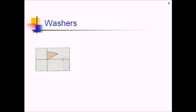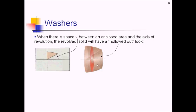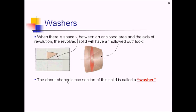For our next couple of examples, we're going to take a look at a different kind of situation — when we have a space right here in between our function and the axis of revolution. This is a little different than before. When there is a space between your area and your axis, you're going to get a different look when you rotate this thing. We're going to end up with a hollowed out look because we have this empty space in the middle of our solid. Our cross sections are no longer circles — we now have a donut-shaped cross section, which in math terms we're going to call a washer.